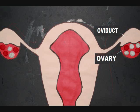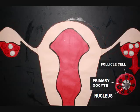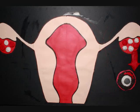At sexual maturity, each of a woman's ovaries contains about 200,000 immature eggs called primary oocytes. A primary oocyte is diploid and is arrested in prophase one of meiosis. A layer of follicle cells surrounds each primary oocyte. Together, an oocyte and its follicle cells make up a follicle.